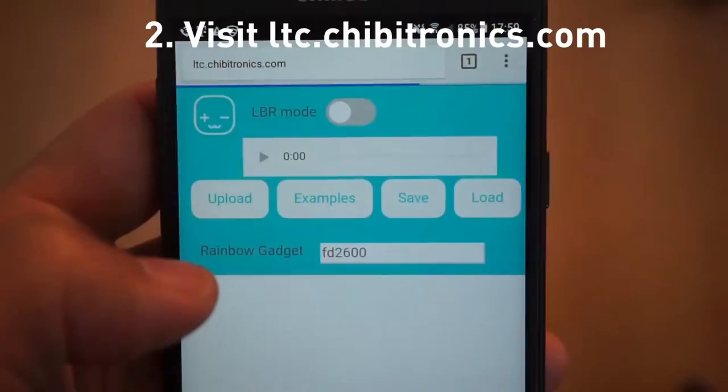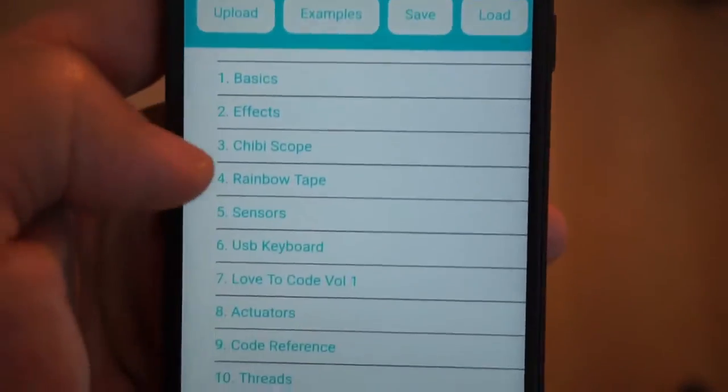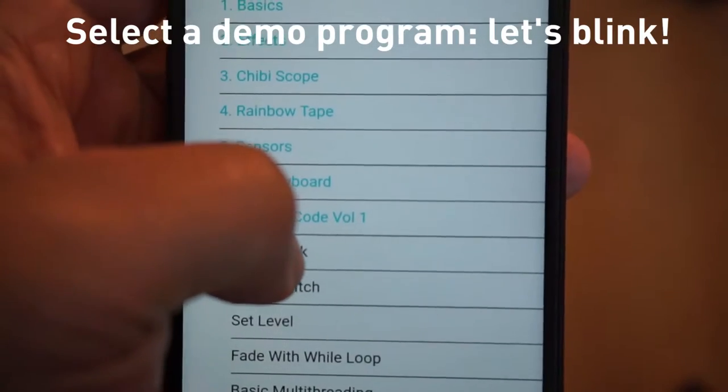Then go to ltc.chibitronics.com to get to our code editor. We're going to start with the Blink example code.